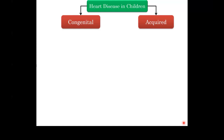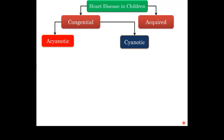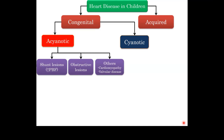It's important to have a working classification to help in management, as it's impossible to remember management for each condition individually. If we take heart disease in children broadly, we classify it into congenital and acquired. Congenital heart disease is divided into acyanotic and cyanotic. Acyanotic heart lesions are further divided into shunt lesions — which always cause increased pulmonary blood flow — obstructive lesions, or other lesions such as cardiomyopathies from metabolic conditions like urea cycle defects or mitochondriopathies.